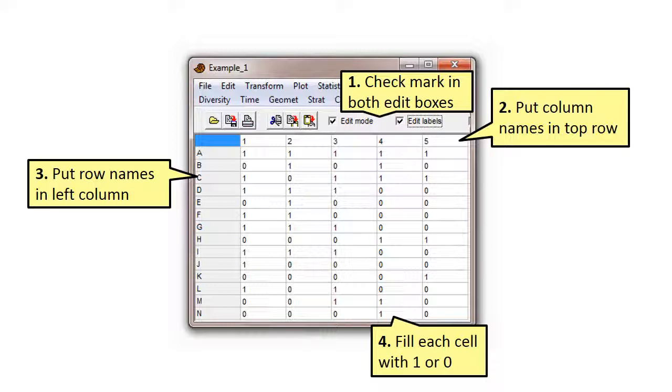The second thing to do is to type the site numbers into the column headers. We are using site numbers from 1 to 5. The third operation is to put a name for each row into the left column.